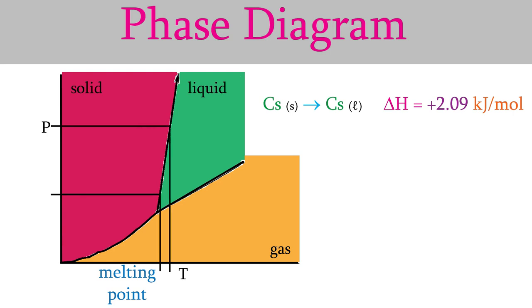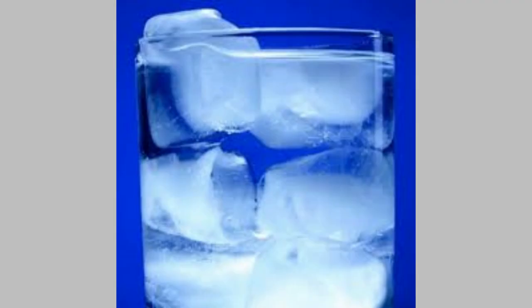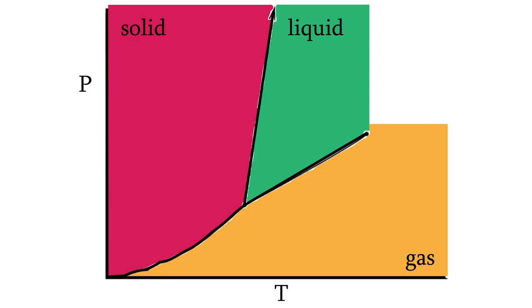There are two other things to notice about phase diagrams. First, there's always one point on the graph where the solid, liquid, and gas phases all meet. If the pressure and temperature are exactly the ones at that point, then all three phases will exist at the same time. For example, you know that at zero degrees Celsius, you can have liquid water and solid water in the same glass. That's just ice water. But you don't have water vapor in that case. However, if you cut the pressure and temperature just right, you could have all three phases. That spot on the phase diagram is called the triple point.